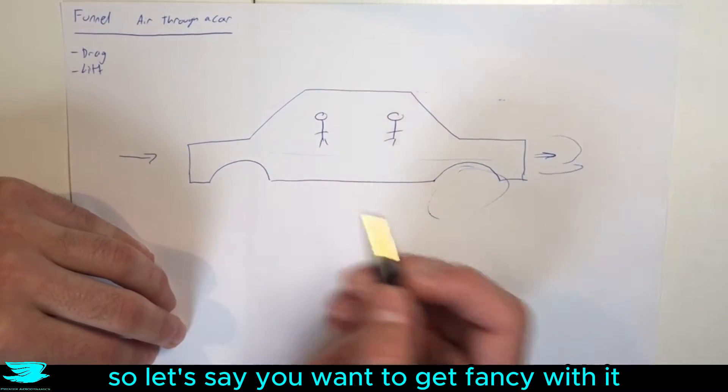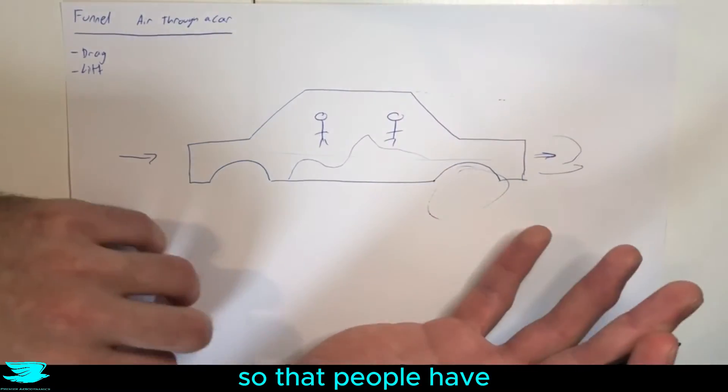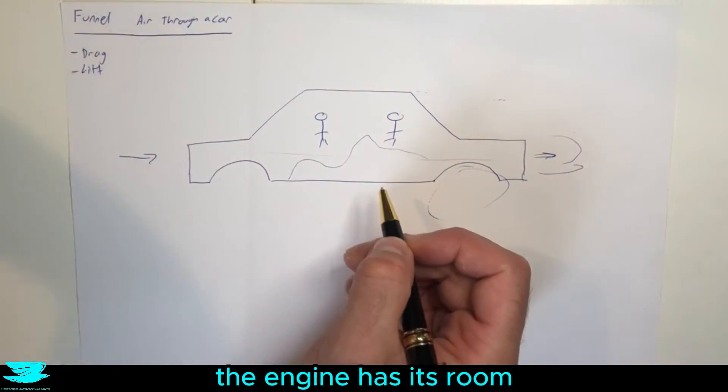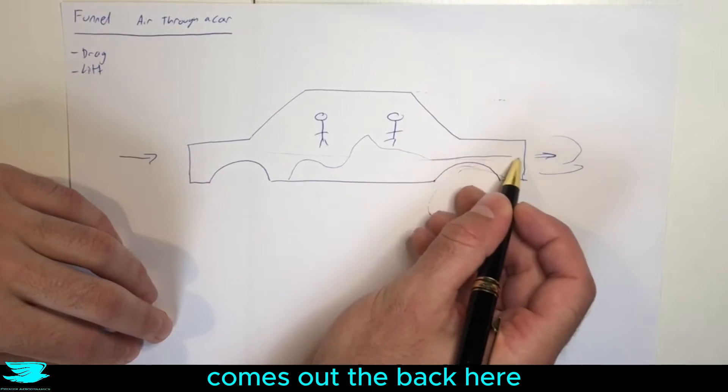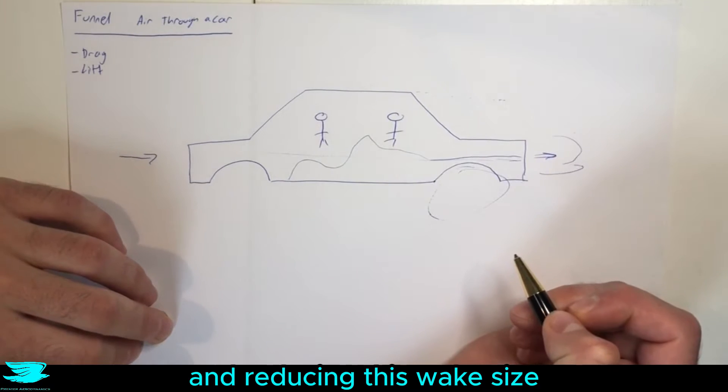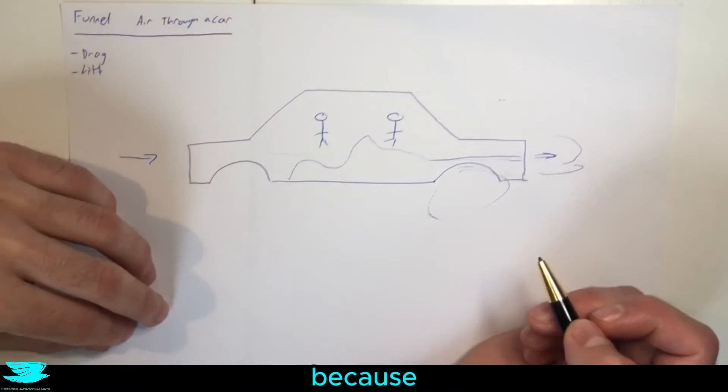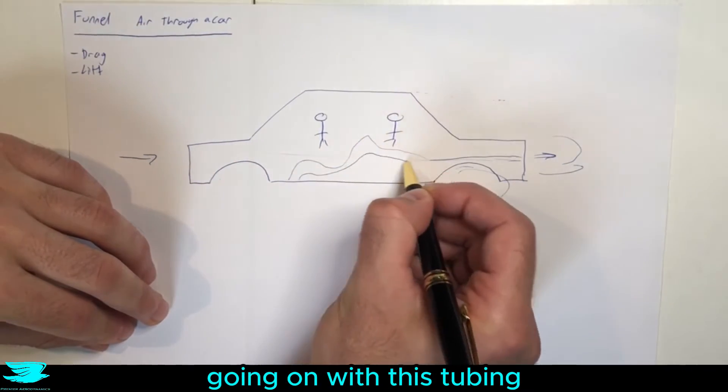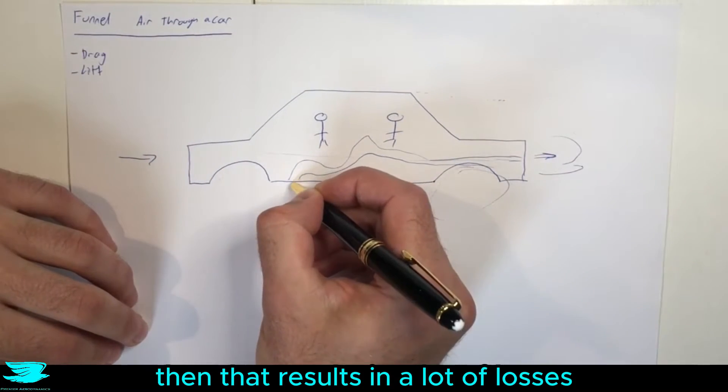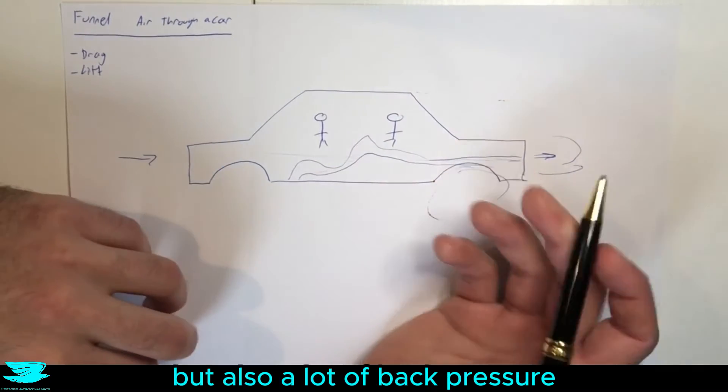Let's say you want to get fancy with it and you want to make the tubing zigzag around so that people have their room to sit there and not be uncomfortable, the transmission has its room, the engine has its room, whatever, and then finally it comes out the back here. We have air funneling off and reducing this wake size and hence the drag. Well that will not necessarily reduce the drag either because if you have this snaking going on with this tubing, that results in a lot of losses. Not just with the skin friction drag because you have greater surface area than the air has to go over, but also a lot of these back pressures.